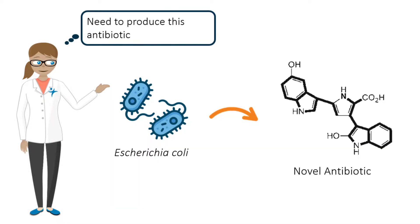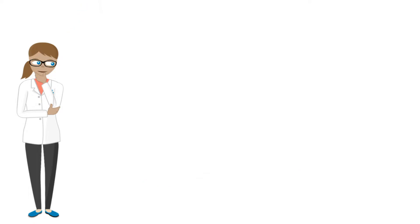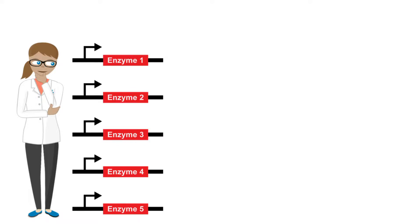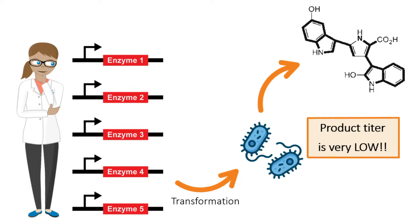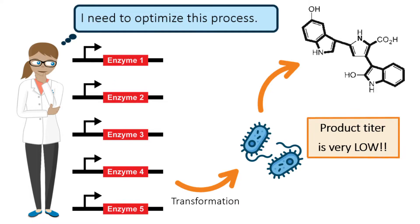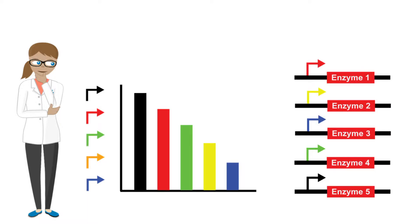Amy is a synthetic biologist that aims to express a novel antibiotic in the well-studied bacterium Escherichia coli. Prior experiments have shown that the pathway to produce this antibiotic involves five enzymes. Activity of the five enzymes, however, is not fully understood. To start the project, Amy constructed each of the five genes in a plasmid using promoters that are well characterized in the lab. After a few weeks, Amy managed to transform the bacterium and produce the novel antibiotic. However, the product titer is very low. The next phase of Amy's project is to increase and optimize the product concentration. As an example, let us say that Amy used five different constitutive promoters with varying strengths for each of the enzymes in her genetic construct.